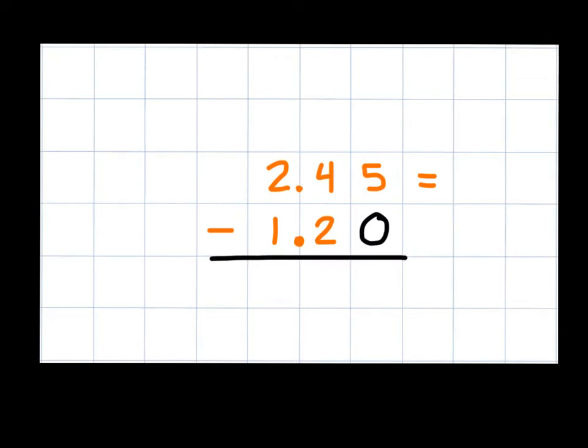Now we would follow the same steps that we would when subtracting any whole number. We are going to start over here on the right, and we would subtract 5 minus 0, which is going to give us 5, and then we would move over to 4 minus 2, which is going to give us 2, and then finally we would move over and subtract our 1s place, and we would subtract 2 minus 1, and that's going to give us 1.